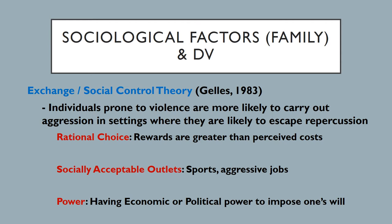When we think about rational choice components, individuals engage in crime when they do a mental calculus and believe the rewards for engaging in criminal behavior will be greater than the costs. If somebody already has an inclination towards violence, their mind makes it seem like a rational decision to inflict harm behind the closed doors of the family setting, where they're less likely to be seen, heard, or reported.